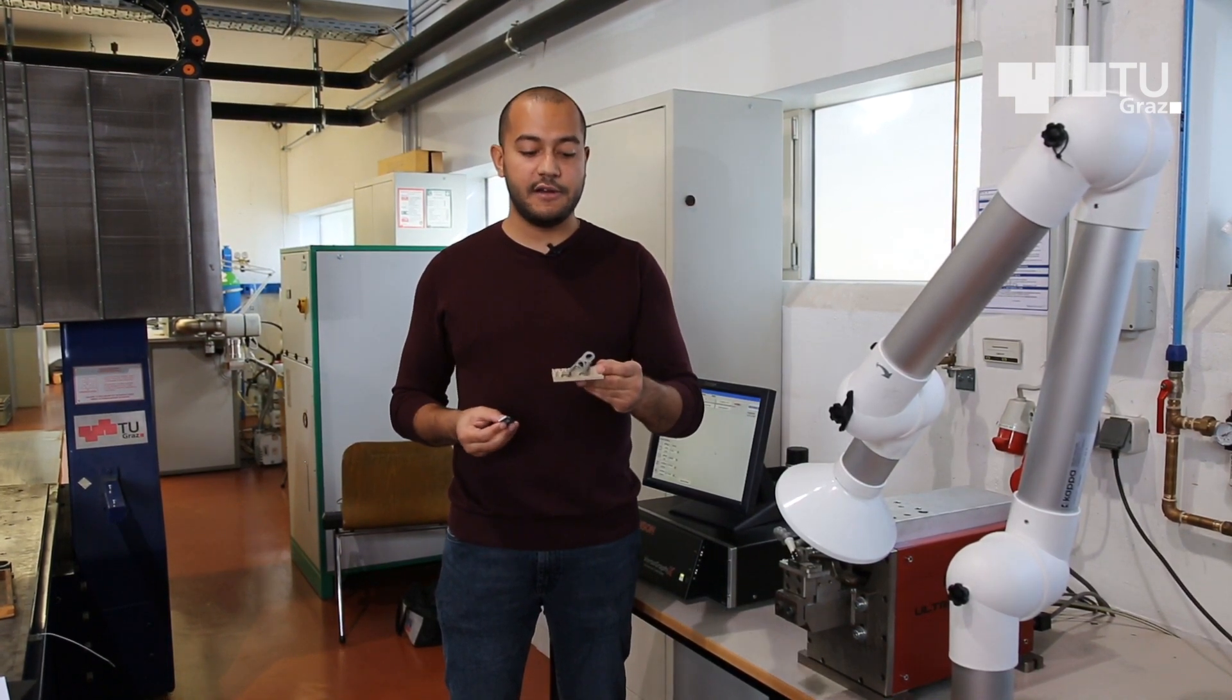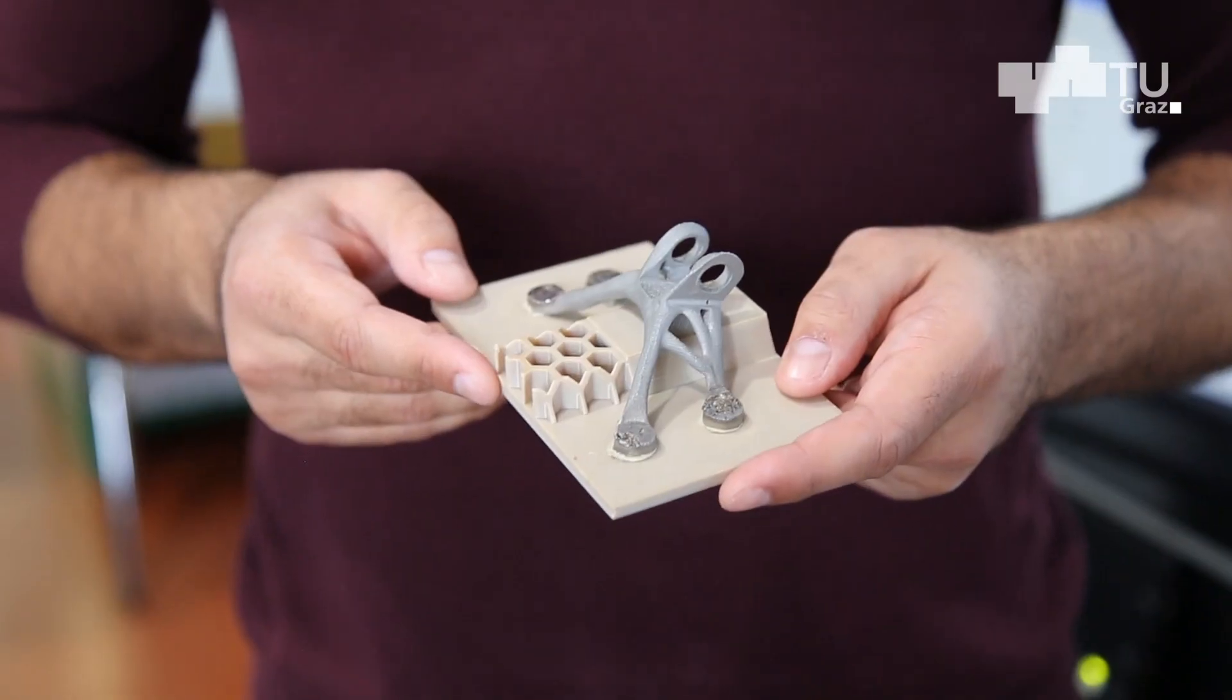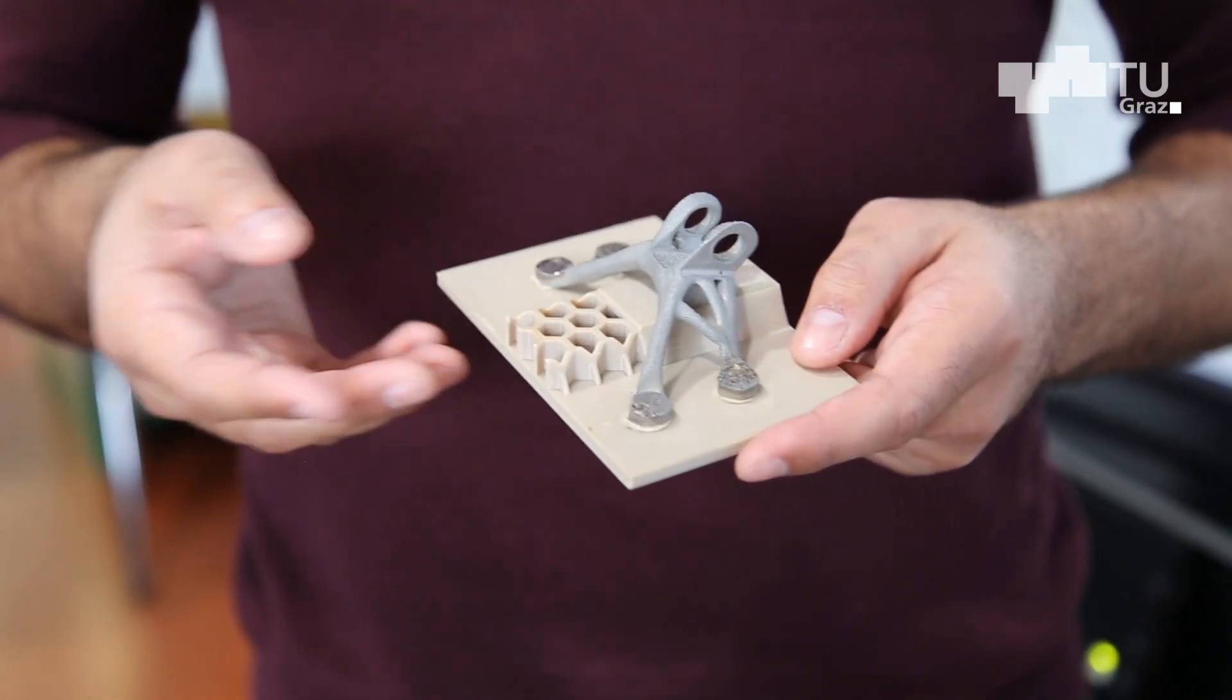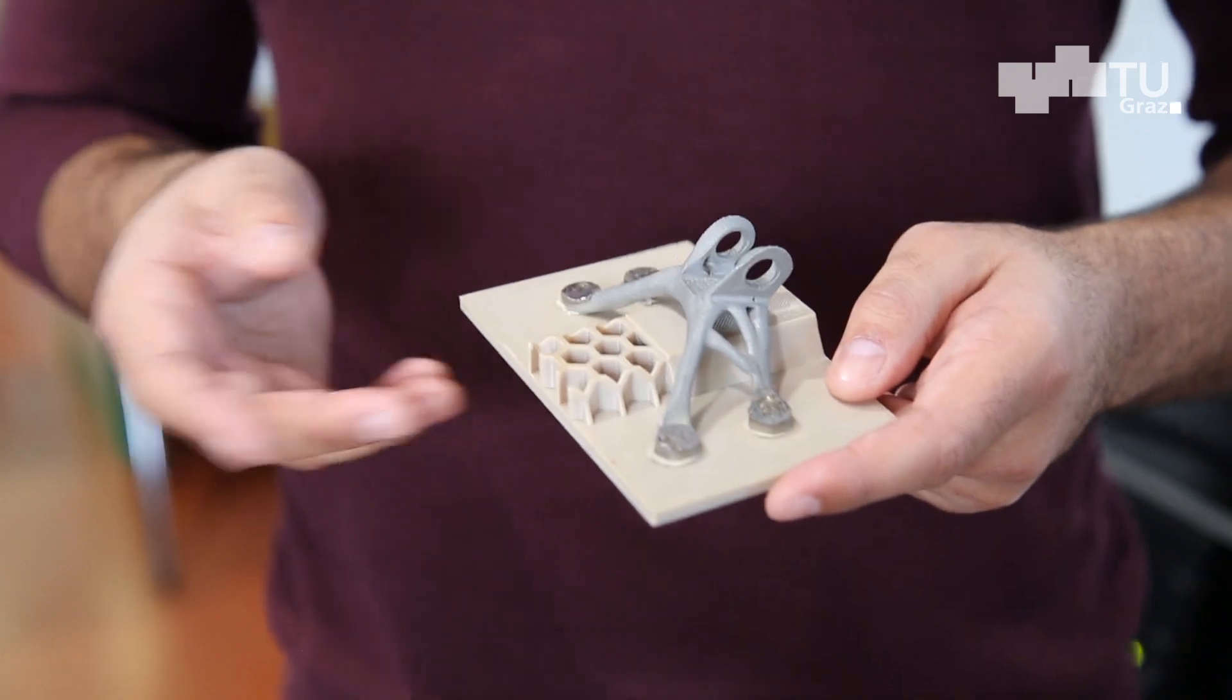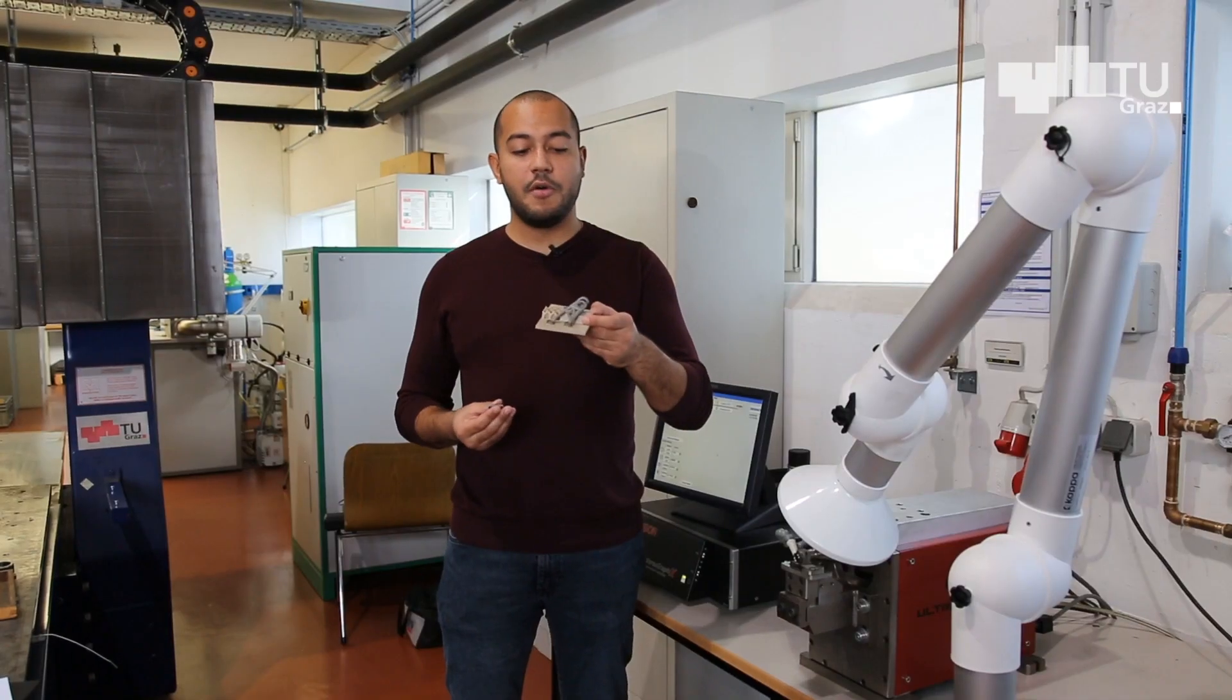The technology can be used to produce not only small samples but also small subcomponents, as we see here in this example where we are combining a bracket with a skin of an aircraft. In this case here, we are also combining the advantages of additive manufacturing.